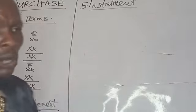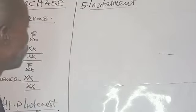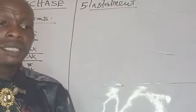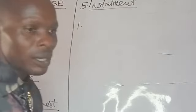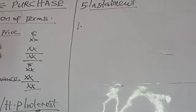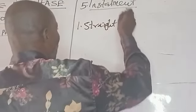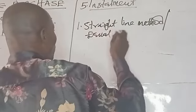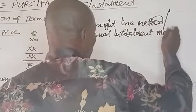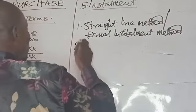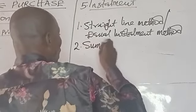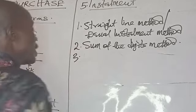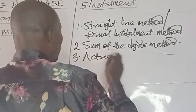There are three methods of spreading the Hire Purchase Interest over the Hire Purchase Period. Number one is the Straight Line Method, also called the Equal Installment Method. Number two is the Sum of the Digits Method. Number three is the Actuarial Method.